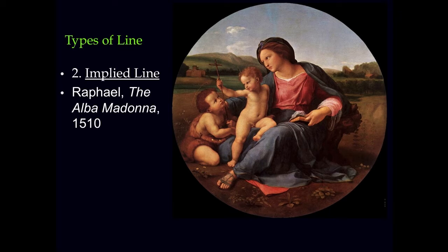Then there's implied line. When we talk about implied line, we talk about looks, gazes, pointing — where there's no actual connection. A cross is an actual line; those are real lines. The physical body is an actual line. But looking — we are animals of observation, and if we see a bunch of people looking a certain direction, we'll look that way too. That's an implied line.